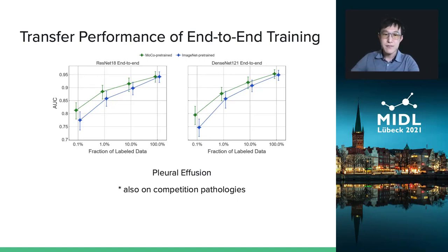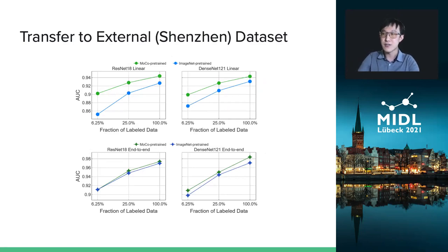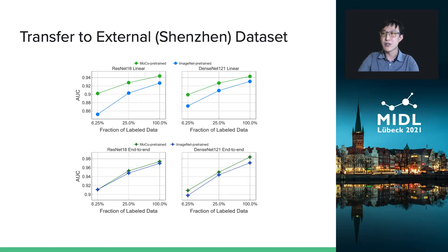We also transferred our results to an external Shenzhen dataset and evaluated on the Shenzhen tuberculosis test. The observation we can make here is similar to that we made for the Chexpert dataset. We see that pre-training our model on chest x-ray images not only improves performance on Chexpert, but it can also be applied to other chest x-ray tasks as well.